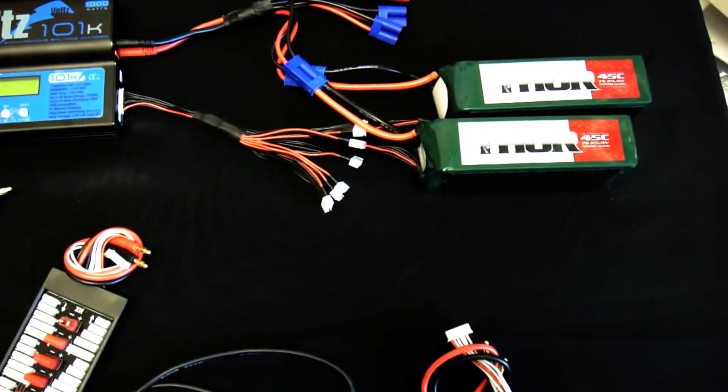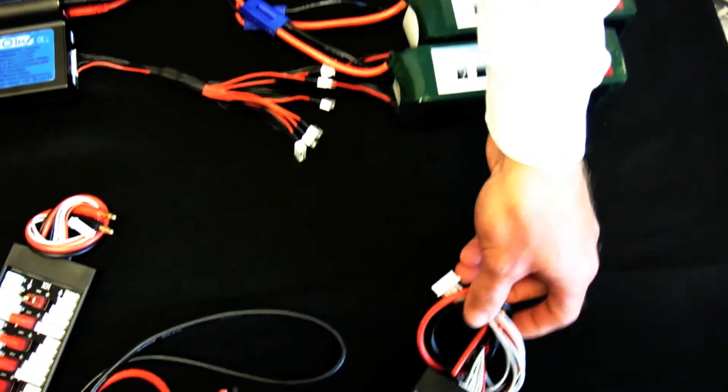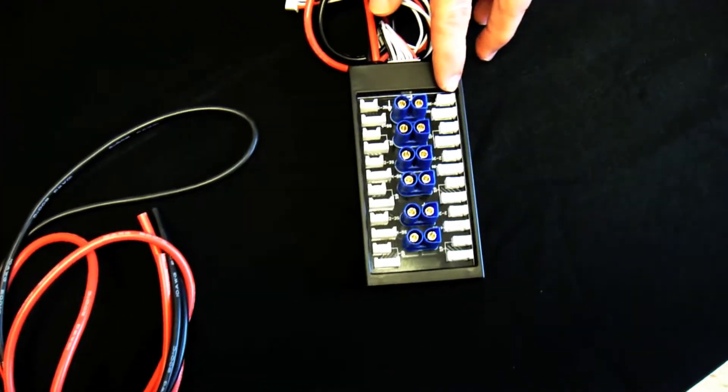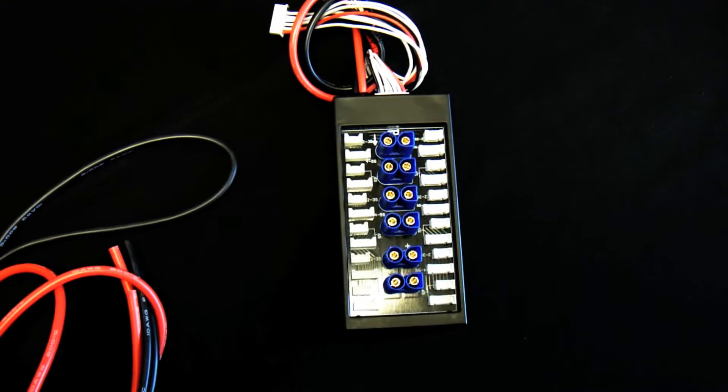In front of us we have the other parallel boards that are available. This is a Thunder Power EC5 type board.